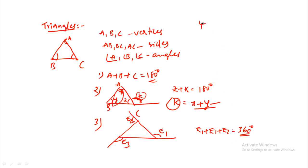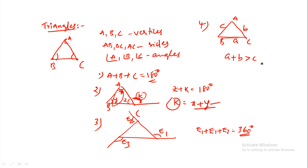In triangle ABC, with opposite sides small a, small b, small c, the sum of any two sides is always greater than the third side: b plus c greater than a, and c plus a greater than b. This is a very very important condition for a triangle.